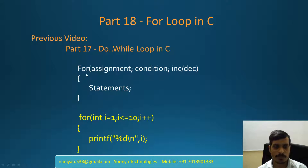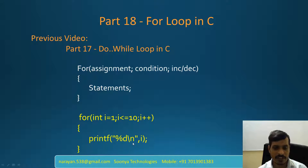Here is the syntax for the for loop. A for loop contains three things: assignment, condition, and increment or decrement. Here we have statements inside the for loop. In this example, int i equals 1 is the assignment. i less than or equal to 10 is the condition checking. And i++ is the increment.